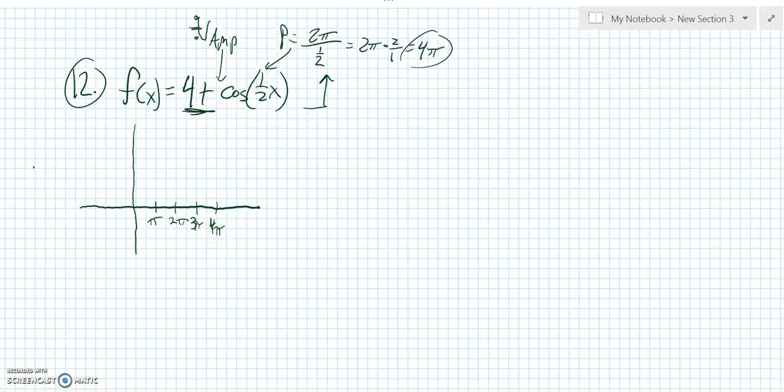So then now, if it didn't have this plus 4, cosine would start at 1, go through, and then go down to negative 1. But since it's plus 4, the whole thing shifted up 4. So 1, 2, 3, 4, 5.